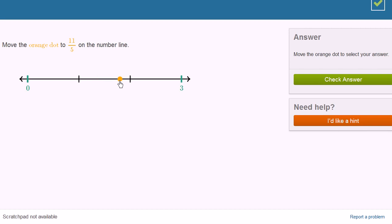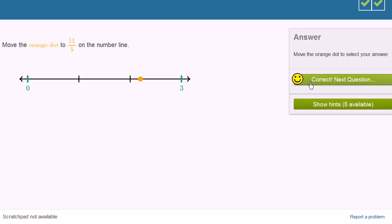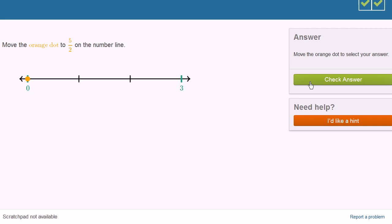8 fifths, 9 fifths, 10 fifths. 10 divided by 5 is 2. 10 fifths is two wholes. 10 fifths and 11 fifths. I'm having more fun than I expected to with this exercise. Let's do one more.